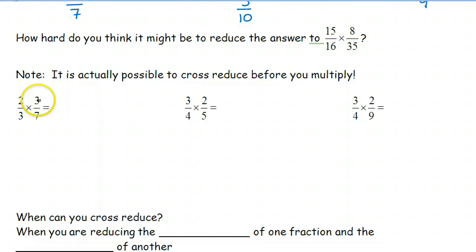But three and three can both be divided by three. And if I divide them both by three, I get one and one. So now, we can multiply these together to get two over seven.